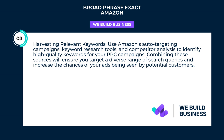Harvesting relevant keywords: use Amazon's auto-targeting campaigns, keyword research tools, and competitor analysis to identify high-quality keywords for your PPC campaigns. Combining these sources will ensure you target a diverse range of search queries and increase the chances of your ads being seen by potential customers.